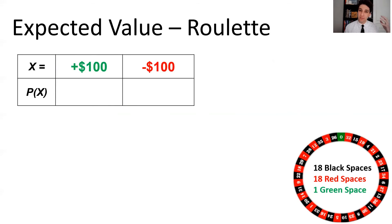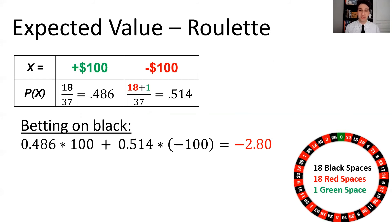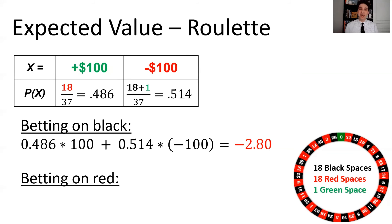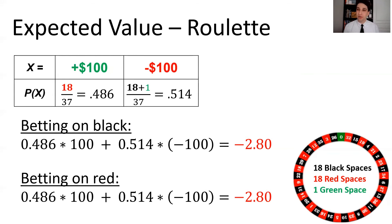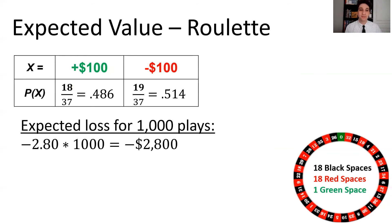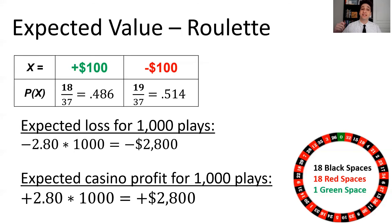Let's apply this to roulette at the casinos. The probability of winning betting on black is 48.6%, the probability of losing is 51.4%. Multiplying those probabilities by the value won or lost gives a loss of $2.80 per game. The same expected value applies to betting on red — 18 out of 37 chance of winning, but 18 black plus the one green space chance of losing. That again outweighs and you lose $2.80 on average. The expected loss for 1,000 plays is $2,800, which means the expected casino profit from 1,000 plays is a positive $2,800.